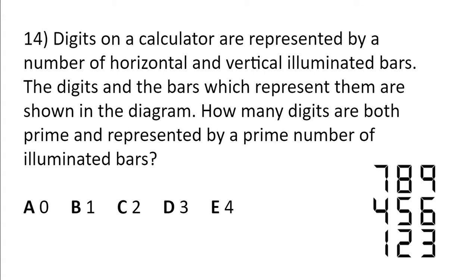Digits on a calculator are represented by a number of horizontal and vertical illuminated bars. The digits and the bars which represent them are shown in the diagram. How many digits are both prime and represented by a prime number of illuminated bars?